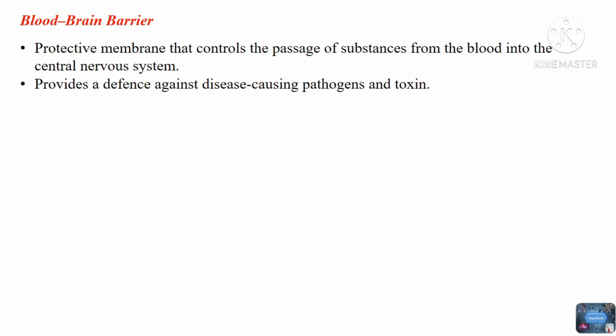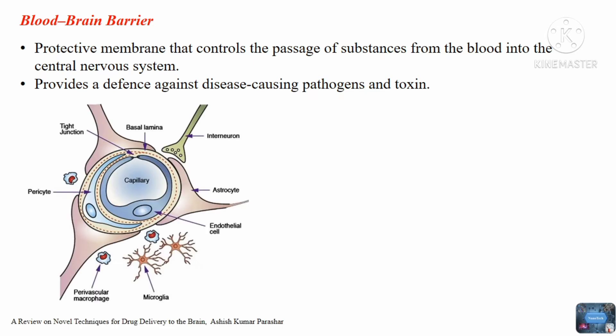Looking at the anatomy of the blood-brain barrier, the brain endothelial cells are joined by tight junctions. These endothelial cells are surrounded firstly by a discontinuous layer of pericytes and secondly by the basal lamina adjacent to the astrocyte feet. Because of this extreme selectivity of the barrier, most drug molecules cannot pass through the blood-brain barrier.